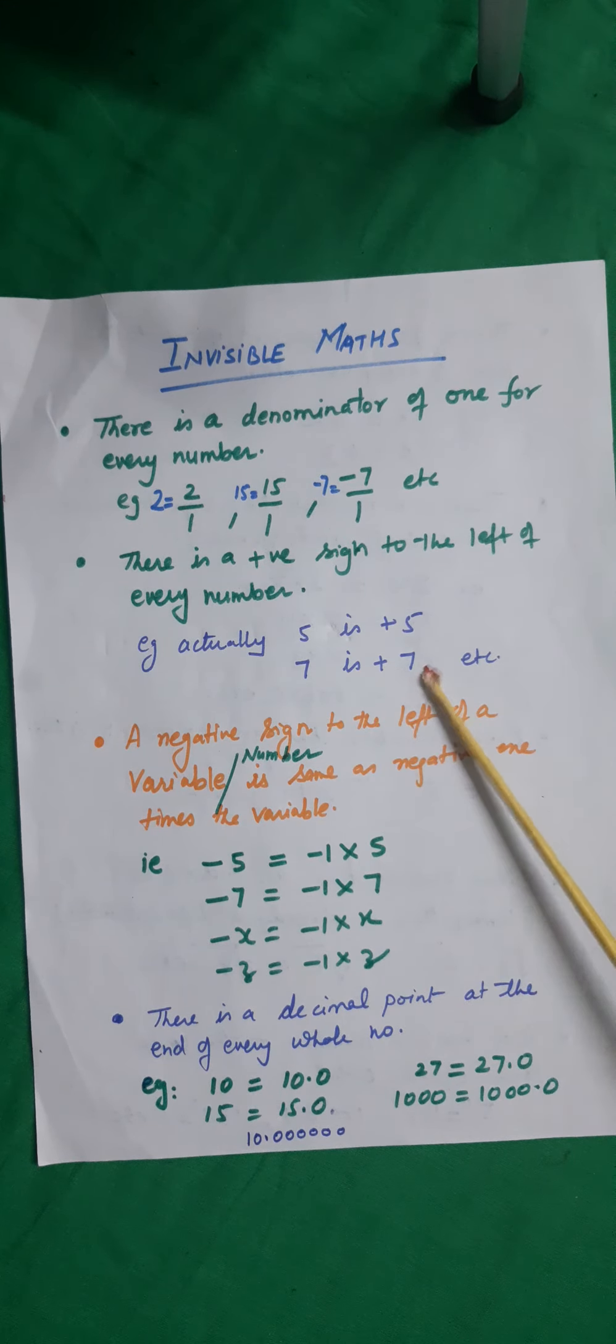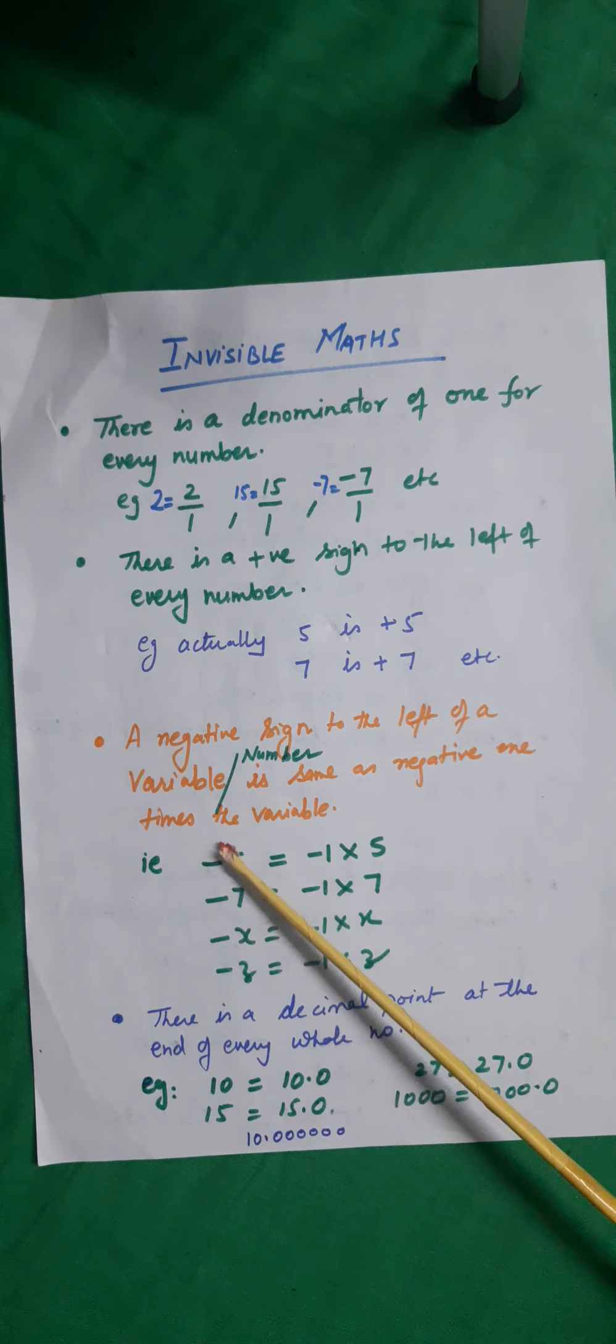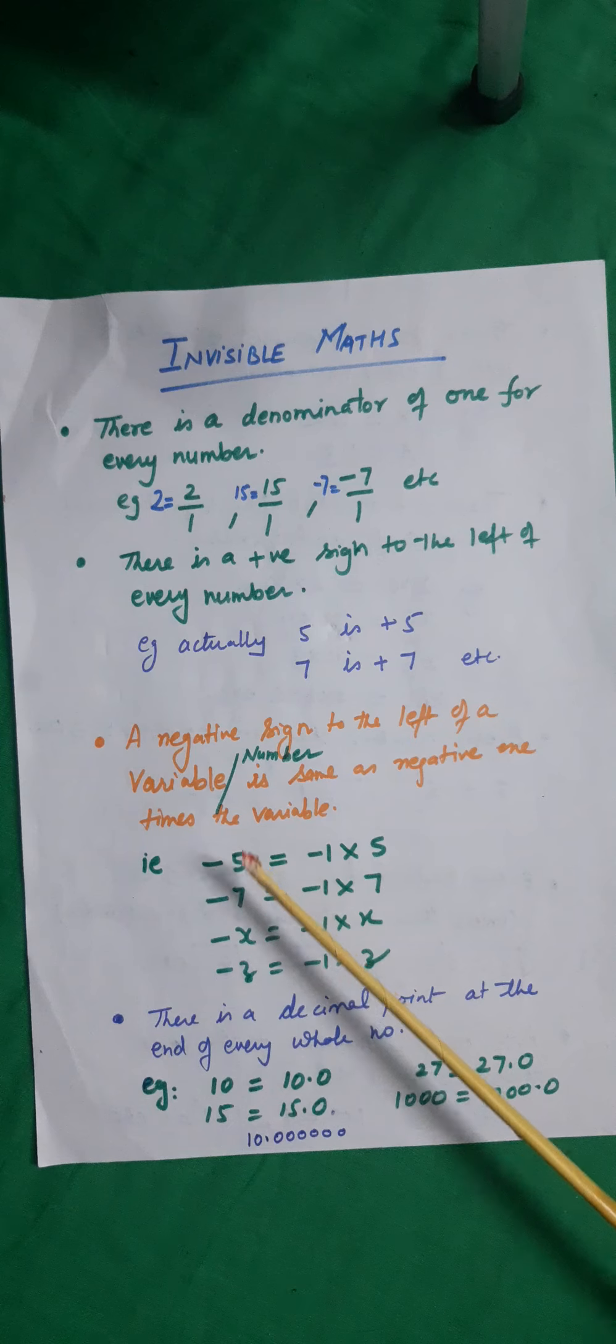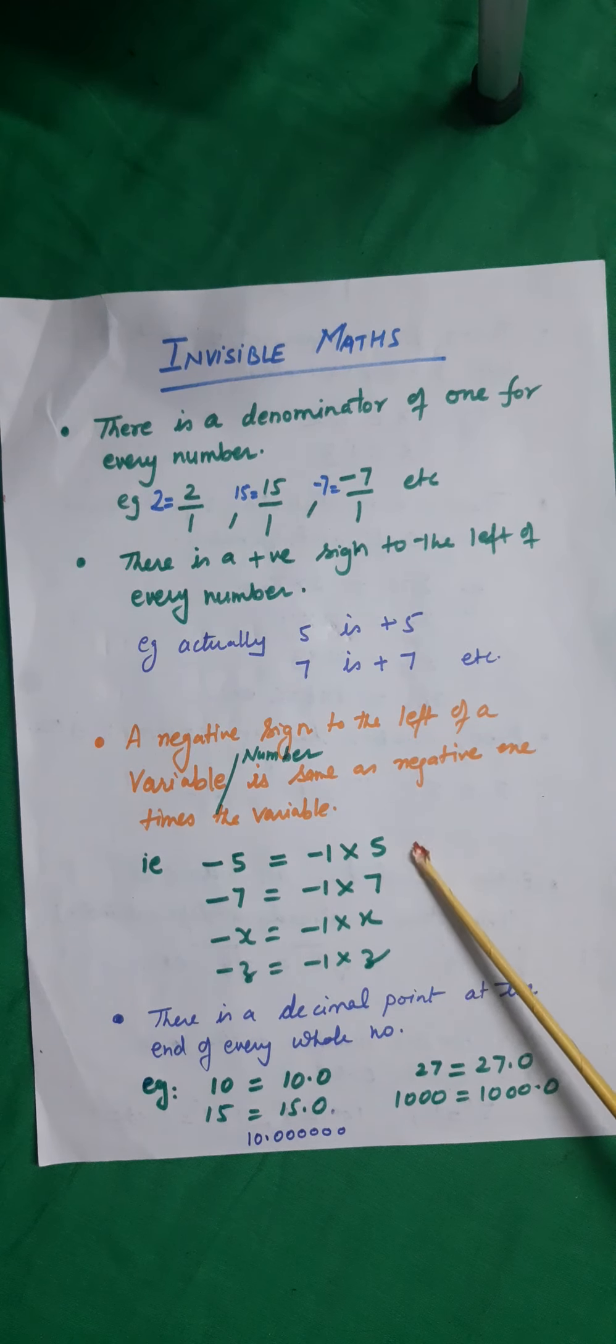A negative sign to the left of a variable or number is same as negative 1 times the variable. That means the multiplication sign here is invisible. Minus 5 can be written as minus 1 into 5.